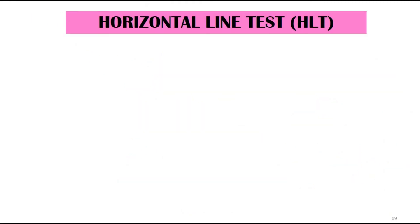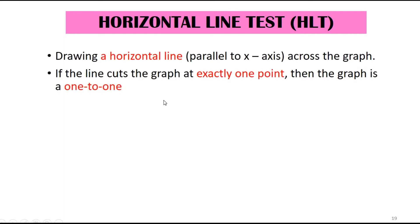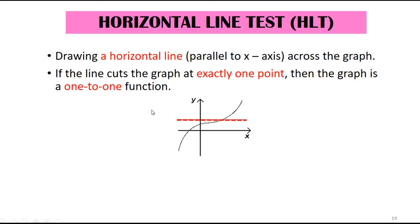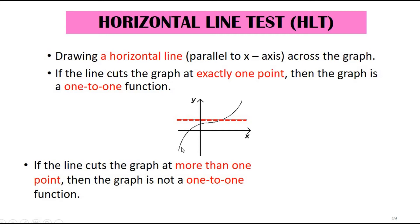If the vertical line test is used to determine a function, the horizontal line test is used to determine one-to-one functions. The horizontal line test involves drawing a horizontal line across the graph. If the line cuts the graph at exactly one point, then the graph is a one-to-one function. You can see from this drawing that the horizontal line cuts at only one point.